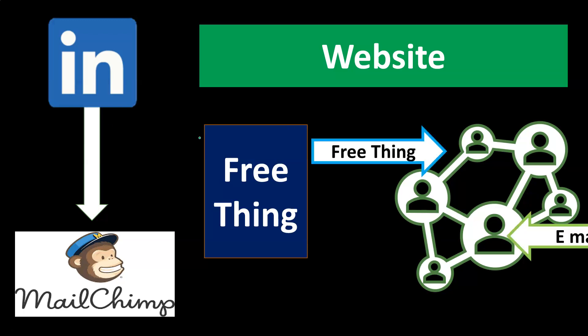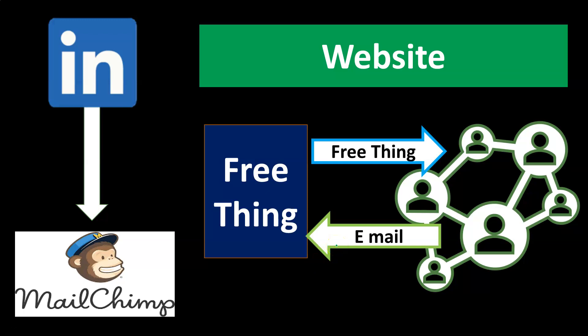You give the free thing in exchange for the email. The person clicks the item on your page, the download happens, and that transaction collects the email. You're going to want to integrate Mailchimp so that when that transaction happens, it automatically adds the email to your list — you don't want to manually collect it and then go add it to Mailchimp yourself. There's a lot of information on how to set that up, and it's a typical setup that a lot of people use: set up Mailchimp, have something to offer, and integrate it so the email gets added automatically.